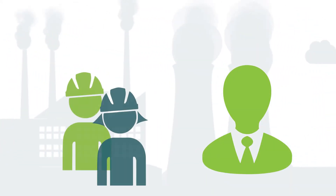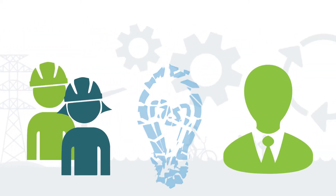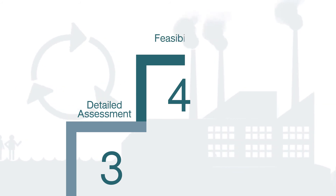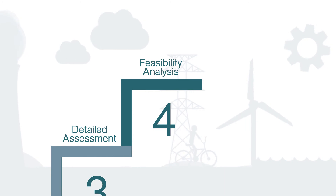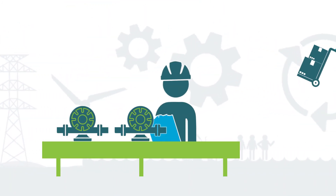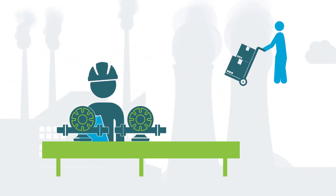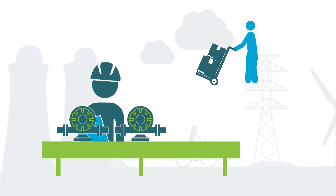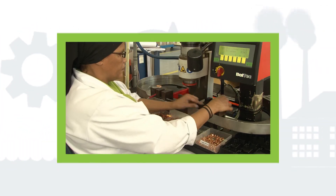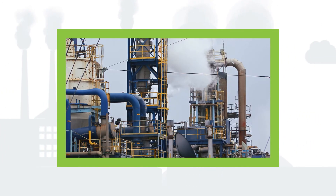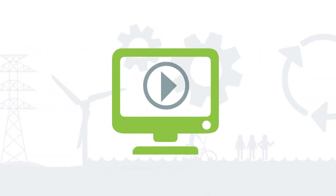Often, the solutions are well-known amongst the production staff, but for various reasons are not implemented. Step 4 is the feasibility analysis. Before beginning full-scale implementation, we pause to interrogate the proposed solution options and to assess their viability from an economic and practical perspective. This step ensures the recommended options do actually meet the organisation's return on investment requirements, have a positive environmental benefit and are technically feasible. You are now ready to take the next steps.